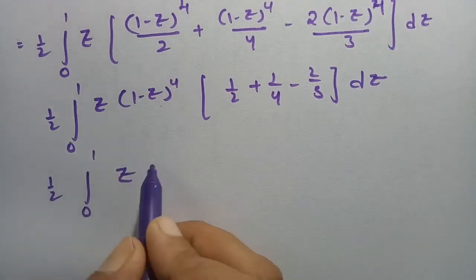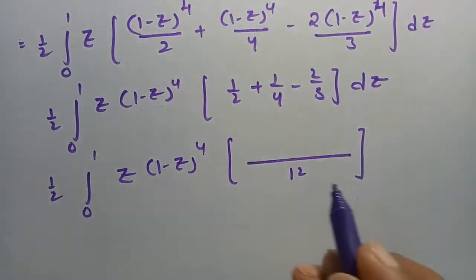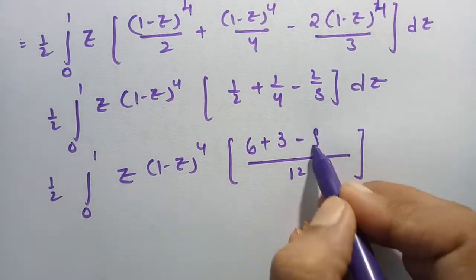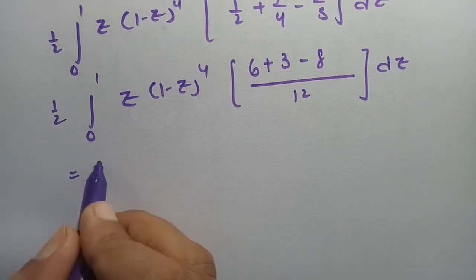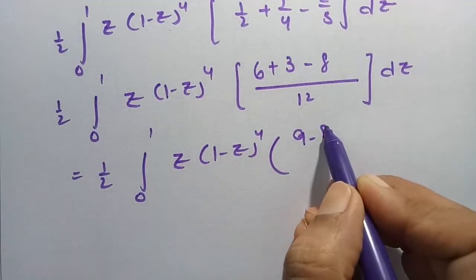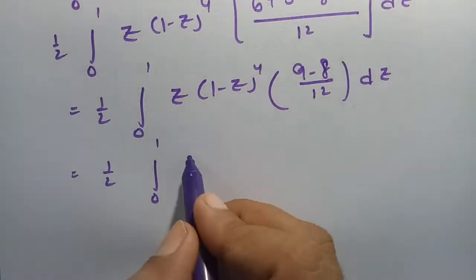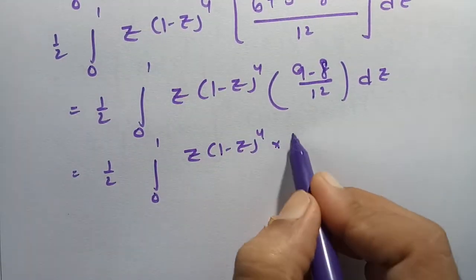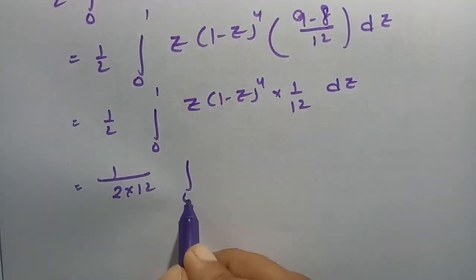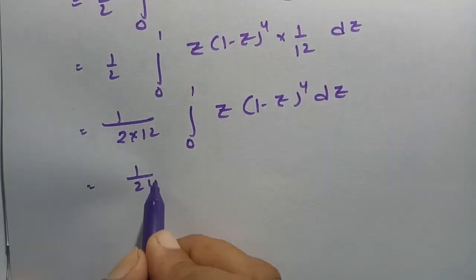Taking 12 as LCM: 1/2 gives 6, 1/4 gives 3, and 2/3 gives 8, so the fraction is (6 + 3 − 8)/12 = 1/12. This gives one-half times (1/12) times integral 0 to 1 of z(1 minus z) to the power 4 dz, which equals 1/24 times integral 0 to 1 of z(1 minus z) to the power 4 dz.